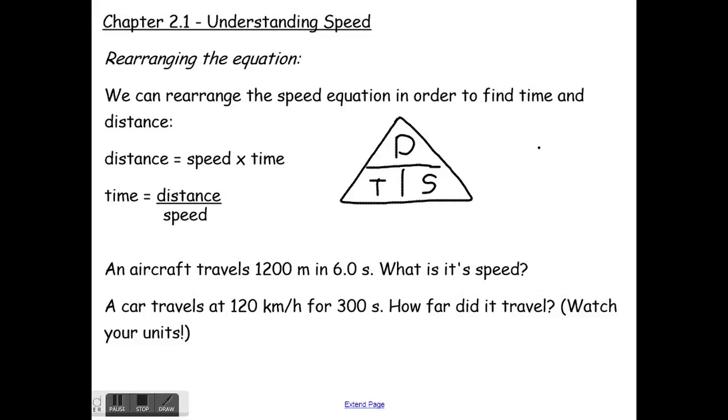So an aircraft travels 1200 meters in six seconds, what is its speed? Speed equals distance divided by time, which in this case would be 200 meters per second. The last one, the car travels 120 kilometers per hour for 300 seconds, how far did it travel? Watch your units. The problem is this is seconds and this is hours, so that's what you should change.